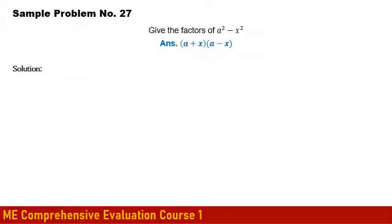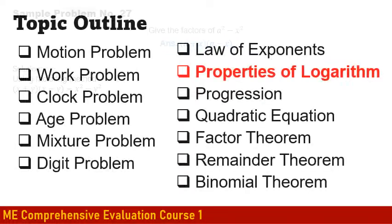We also factor a² − x² using the difference of squares: a² − x² = (a+x)(a−x). Using the factoring method, substituting a and x into the identity x² − y² = (x+y)(x−y) gives the same result, confirming the factorization.